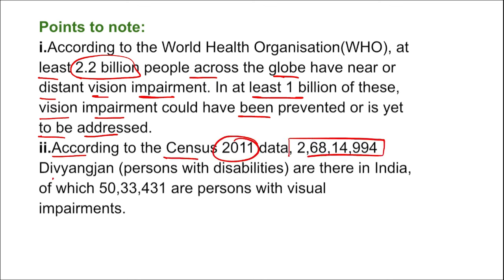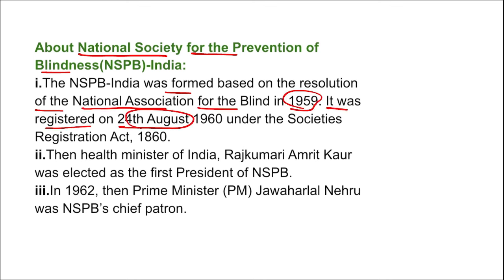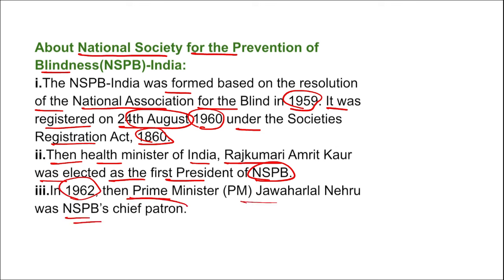The National Society for the Prevention of Blindness (NSPB) was formed based on a resolution of the National Association for the Blind in 1959, and was registered on 24th August 1960 under the Societies Registration Act of 1860. Health Minister of India Raj Kumari Amrit Kaur was elected as the first president of NSPB. In 1962, then Prime Minister Jawaharlal Nehru was the chief patron.